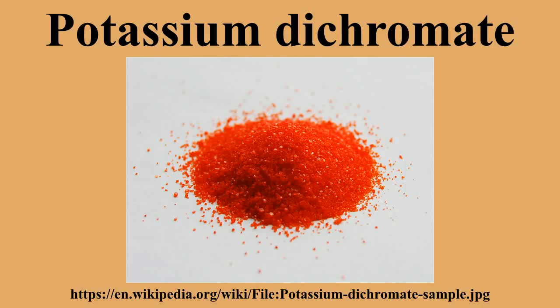Accuracy can be improved by calibrating the dichromate solution against a blank. One major application for this reaction is in old police breathalyzer tests. When alcohol vapor makes contact with the orange dichromate-coated crystals, the color changes from orange to green. The degree of the color change is directly related to the level of alcohol in the suspect's breath.